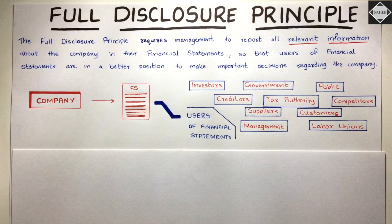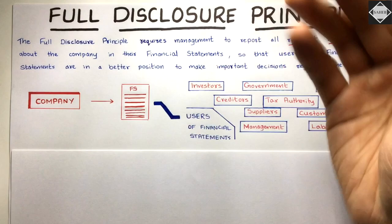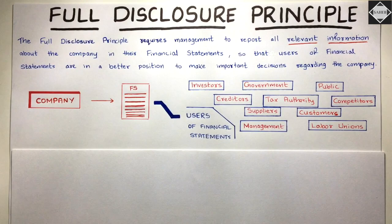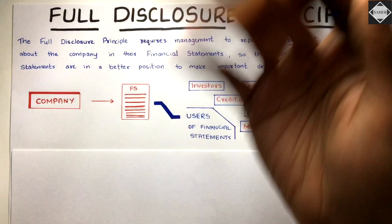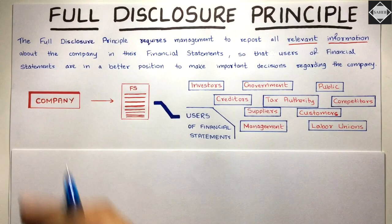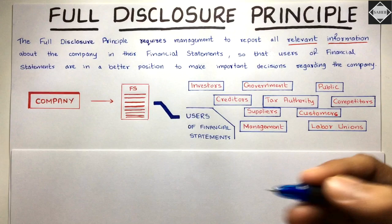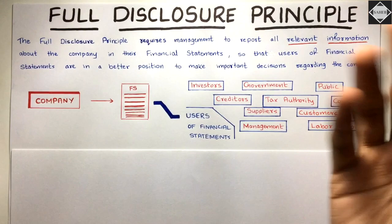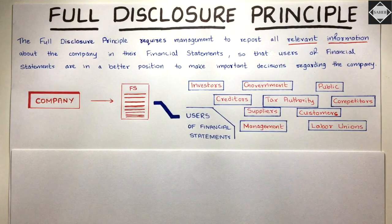News is also important because it may contain critical information that financials might hide within large amounts of data. Suppliers also have to decide whether to sell stock to the company and how much credit period to give. Even management itself needs financial statements for managerial decisions — that's management accounting. Tax authorities, customers, labor unions, competitors, and the public — everyone understands the company through financial statements.